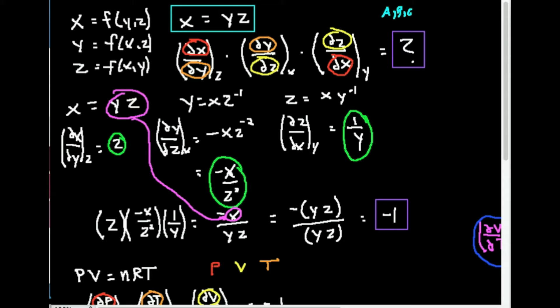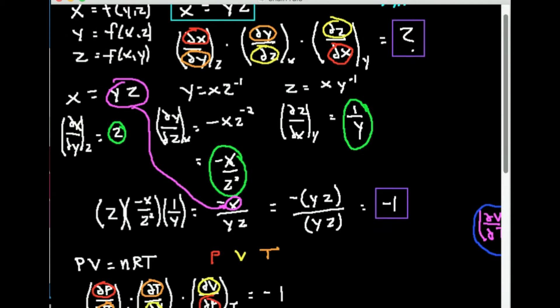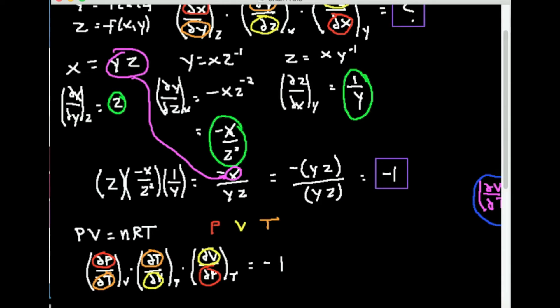So I have three forms of this equation written here: x equals yz, y equals x over z, and z equals x over y. I'm going to take these partial derivatives and then multiply them. The first partial derivative is the partial of x with respect to y at constant z—that's just z, since z is a constant. Now if I take the partial of y with respect to z at constant x, I have to use the power rule because this is z to the minus first. So I multiply by negative one and drop the power by one, giving negative x over z squared. Then the partial of z with respect to x at constant y—y is a constant and I differentiate with respect to x, so this is just one over y.